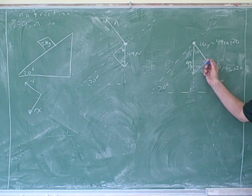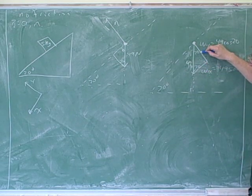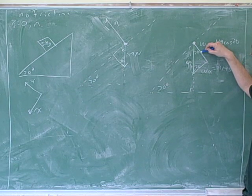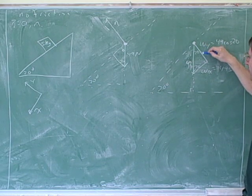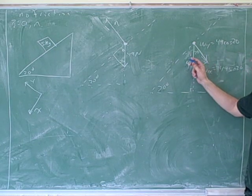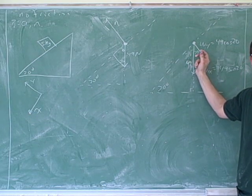So in this picture over here, one thing we should have done is figured out the directions of the components. For example, is this component pointing up and left or down and right? Down and right, because it represents an overall vector that's pointing down. Since the overall vector is pointing down, this one should also be pointing down.